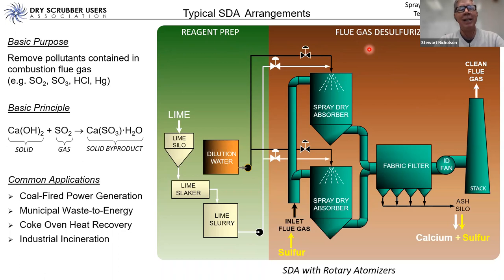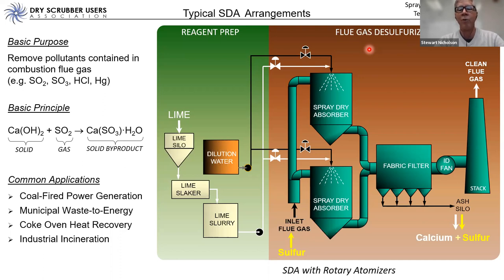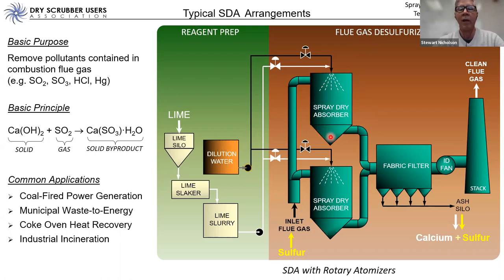The basic purpose of the SDA is to remove acid gas components typically contained in combustion flue gas — most importantly sulfur dioxide (SO2), sulfur trioxide (SO3), and hydrogen chloride (HCl). Spray dryers are also very effective at removing certain species of mercury and other acid gas components, making it a broadly applicable system for air pollution control in combustion processes. The basic principle involves a chemical reaction that mostly occurs in the SDA vessel itself.